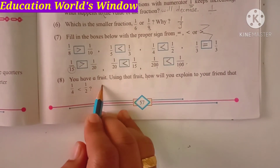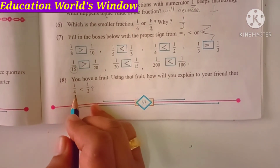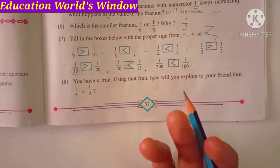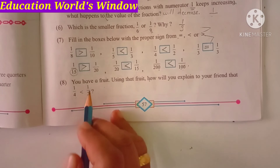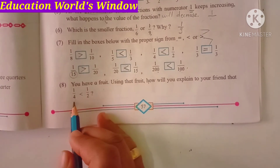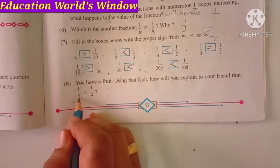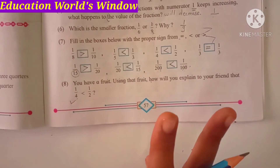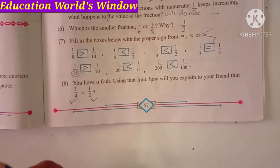The last question: you have a fruit. Using that fruit, how will you explain to your friend that 1 upon 4 is smaller than 1 upon 2? Think about how you can use the fruit to explain this to your friend.